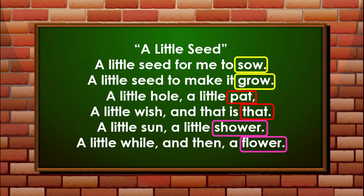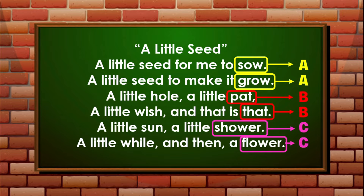The last words in lines 1 and 2 are rhyming words — Sow and Grow — and we label them A, A. The last words in lines 3 and 4 — Pat and That — are also rhyming words, so we put them B, B. And the last words in lines 5 and 6 are also rhyming words, so we label them C, C.